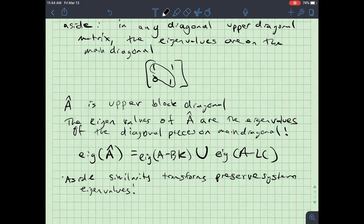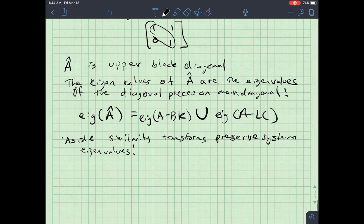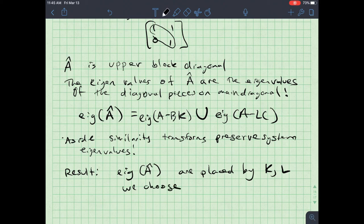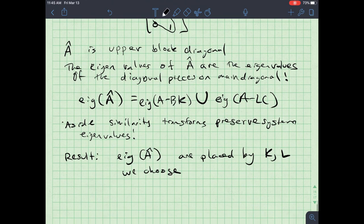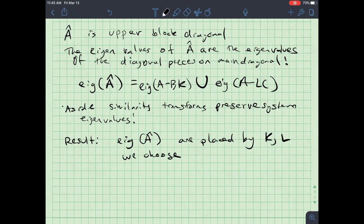All right. So as a result, all the eigenvalues, or poles are located where they're placed by the K and L designs. So the result is that the eigenvalues of A are placed by the K and L we choose. Now, of course, this makes the assumption that the system is observable and controllable. And we're going to say, that is, that happens to be, true if we're working through this.